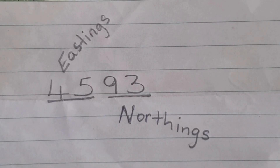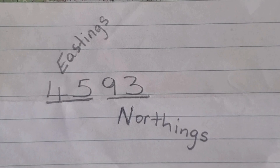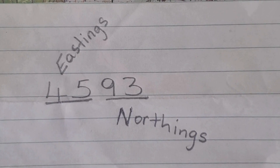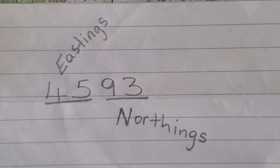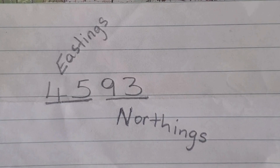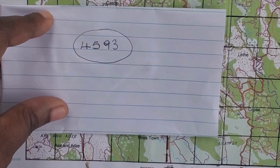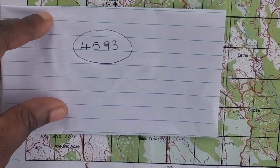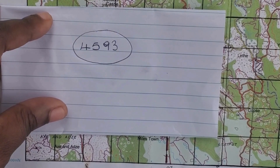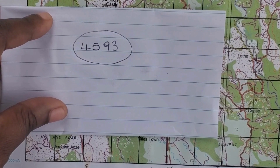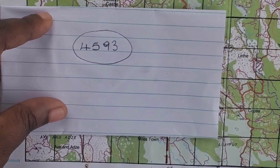Remember that in a four-figure grid reference, as the name suggests, you must have four figures for your answer. The first two figures are your eastings and the last two figures are your northings. So here we have our answer: the four-figure grid reference of the church at Friendship is 4593.